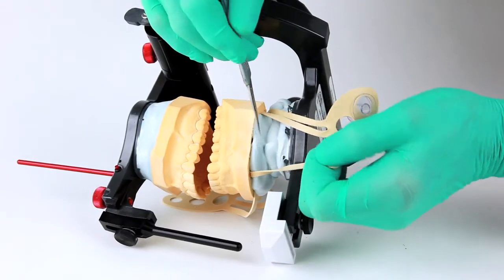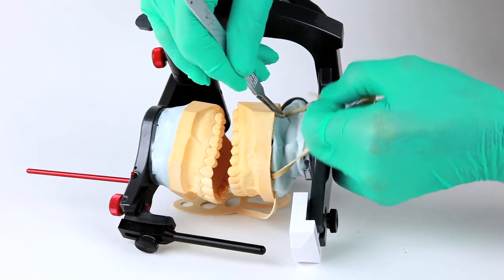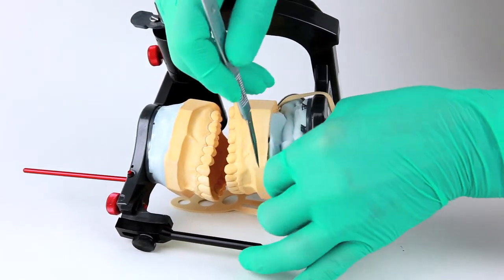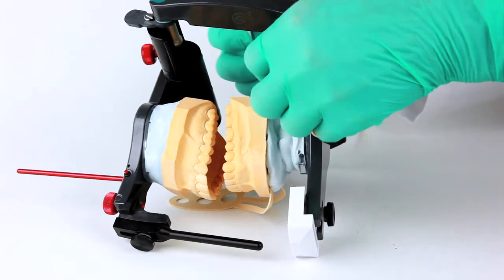The articulator can be repositioned for easy access to the flexi-mount attachment arms. With the individual arms stretched tightly, they can be easily cut at the base of the cast by using a sharp laboratory knife.